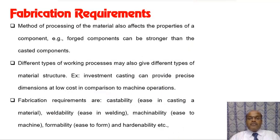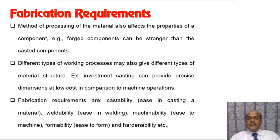Fabrication requirements: the method of processing a material affects the properties of the component — forged components can be stronger than cast components. Investment casting provides precise dimensions at low cost compared to machining. Fabrication requirements include castability, weldability, machinability, formability, and hardenability.